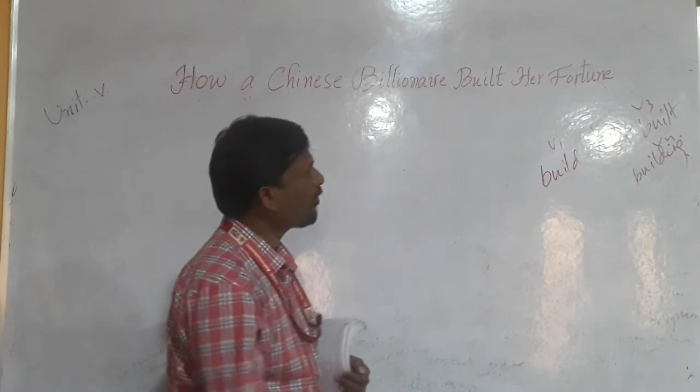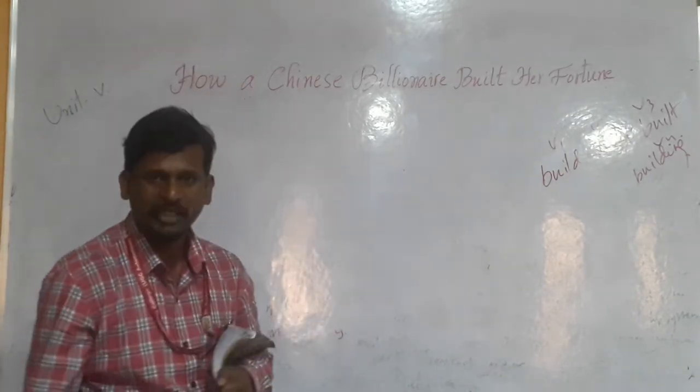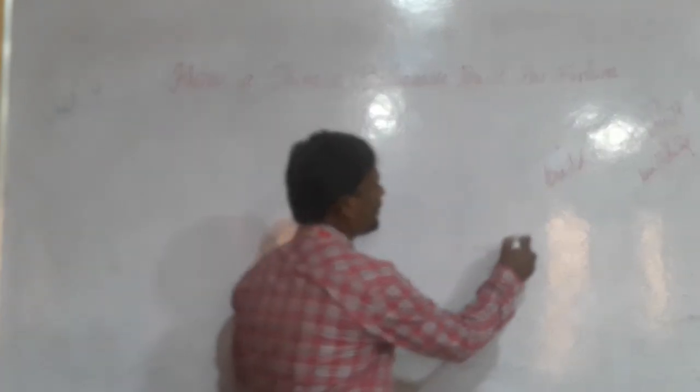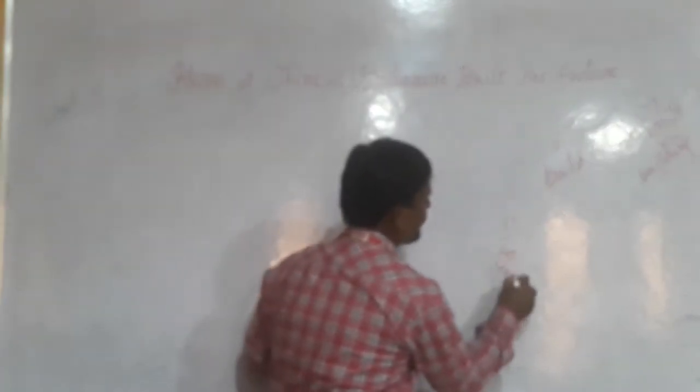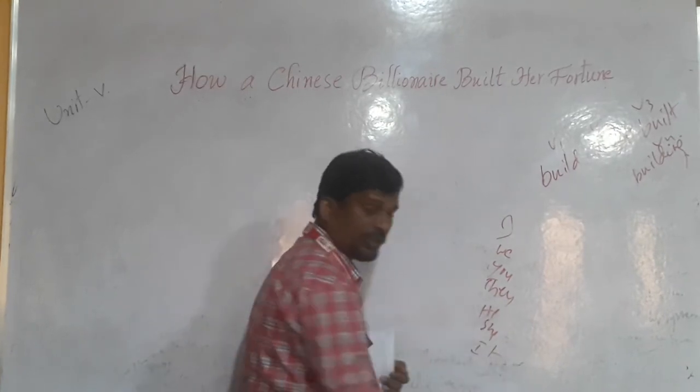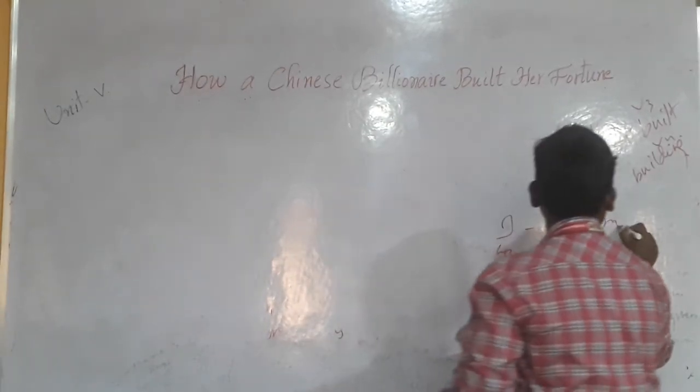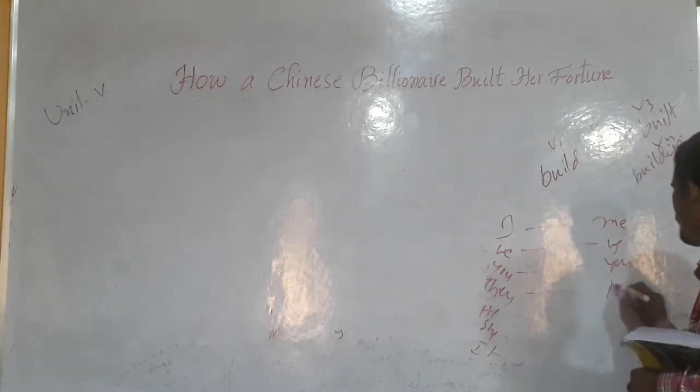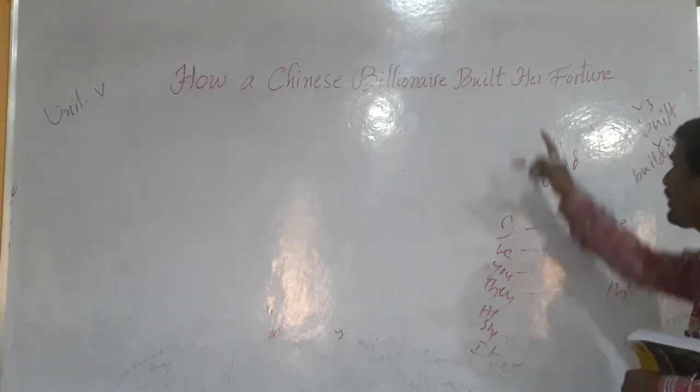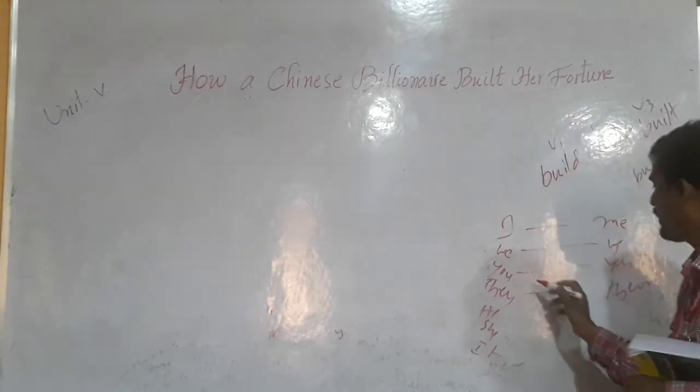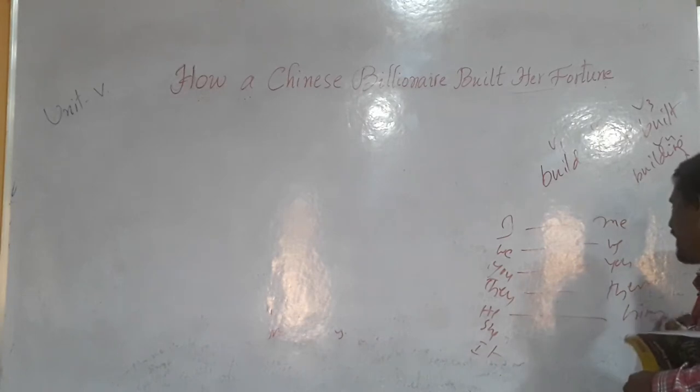Next, last one is Fortune. Her is a pronoun. In pronoun there are many types, this is a possessive pronoun. I, we, you, they, he, she, it are subjective pronouns. And here me, us, you, them are objective pronouns.